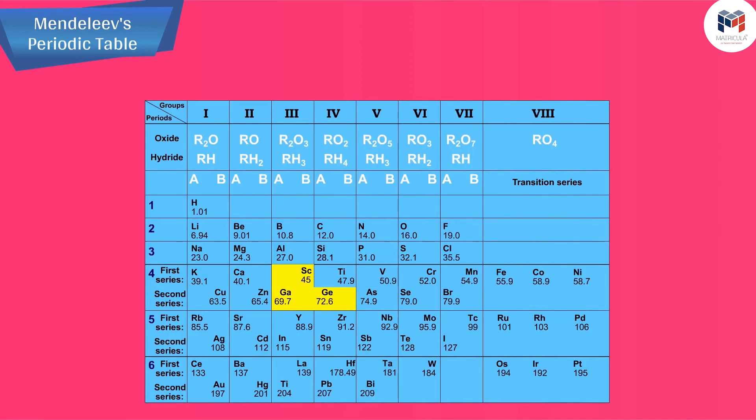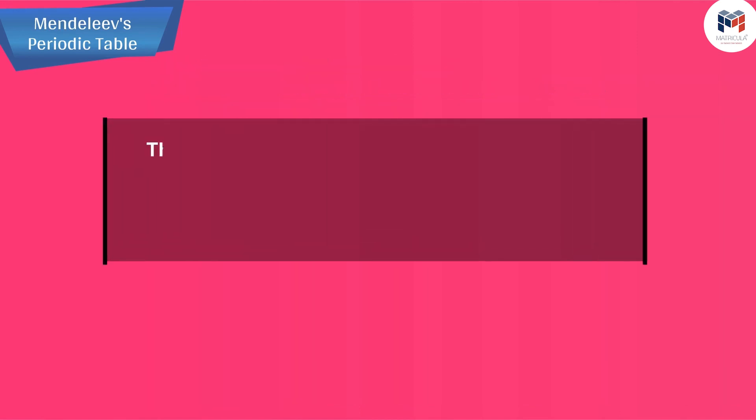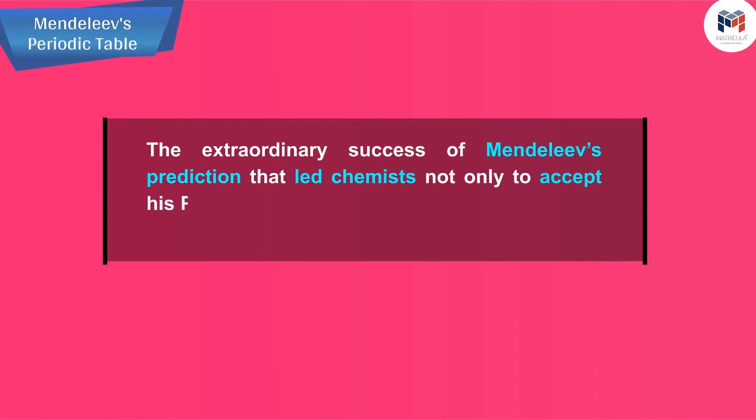This table provided convincing evidence for both the correctness and usefulness of Mendeleev's periodic table. Further, it was the extraordinary success of Mendeleev's prediction that led chemists not only to accept his periodic table but also recognize him as the originator of the concept on which it is based.